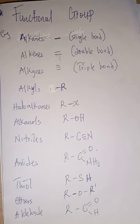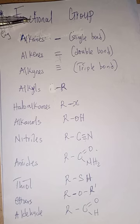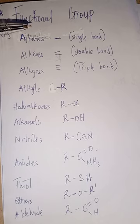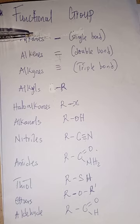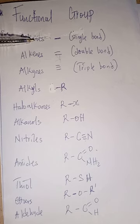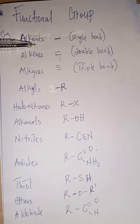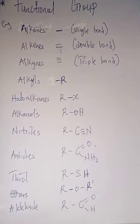So what is a functional group? A functional group is an atom, group of atoms, or a bond common to a homologous series — I will cover homologous series in our next class — and which determines the main chemical property of that series. This thing we call a functional group can be an atom, a bond, or a group of atoms, and it tells us the main chemical property of that series. This is the reason why a particular series of compounds behaves in a certain way.